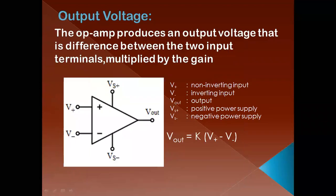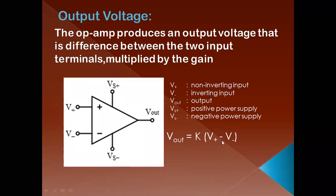The output voltage of an op-amp is produced based on the difference between the two input terminals multiplied by the gain. Internally, the op-amp has a differential amplifier, so V_out = K × (V+ − V−), where V+ is the input applied to the non-inverting terminal and V− is the input applied to the inverting terminal. The difference of these two voltages, V1 minus V2, is multiplied by gain K to get the output.